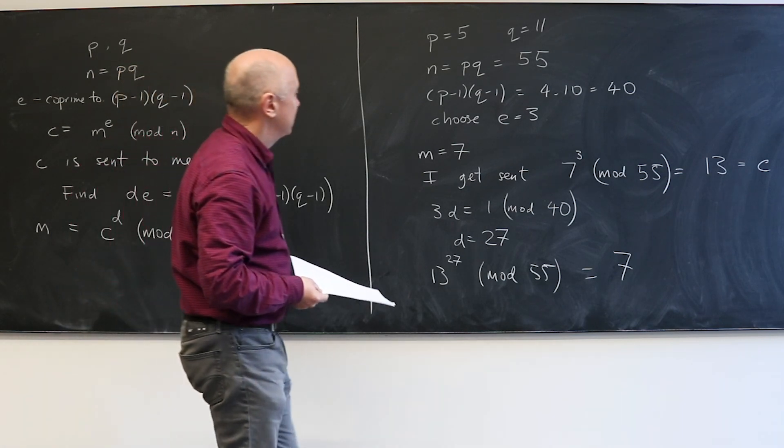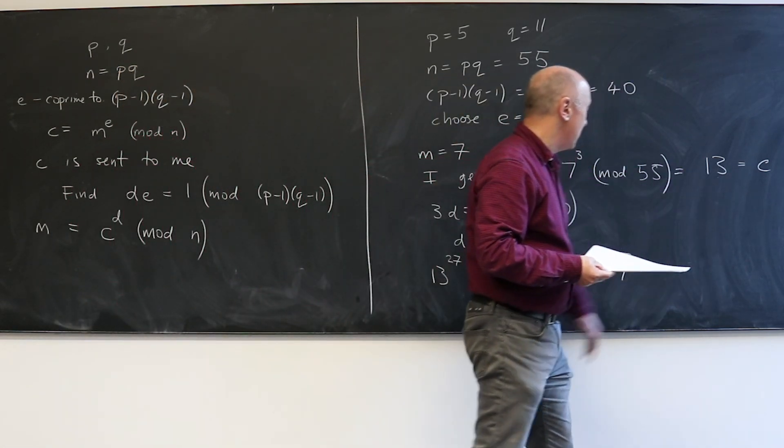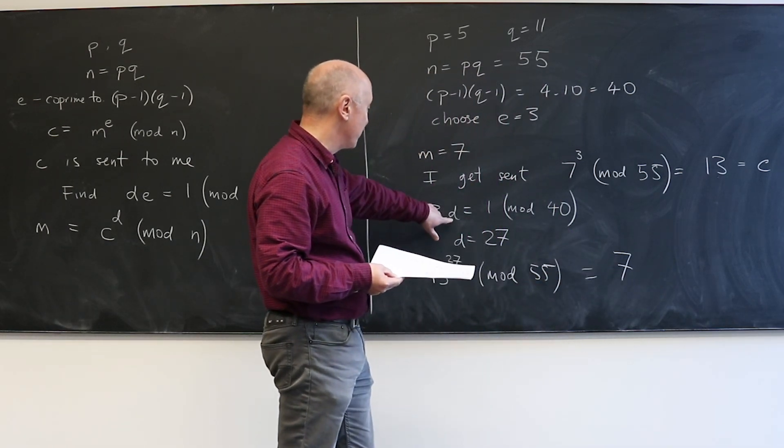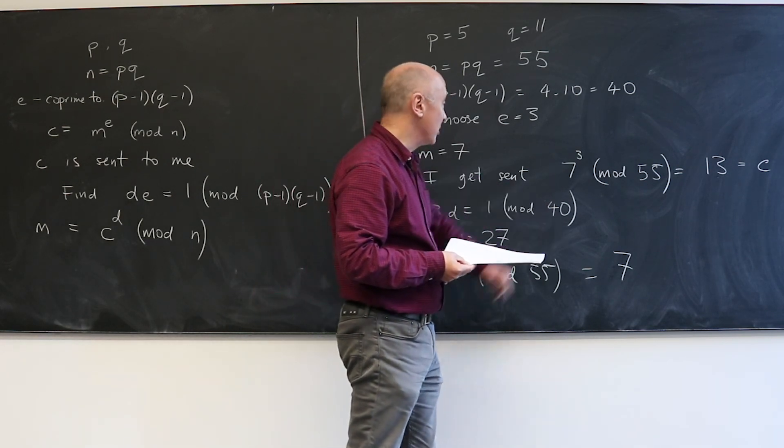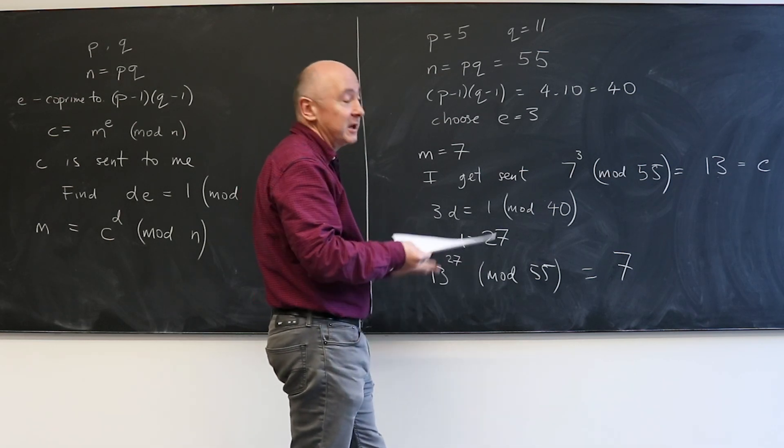The answer you'll find is that that gives you back 7. So this is how somebody can send me the number 7 encrypted into 13 in a way that I can decrypt. If I know P and Q because I needed to construct my D here which involved P minus 1 and Q minus 1, but which unless you know P and Q is very hard to do.